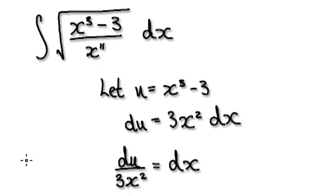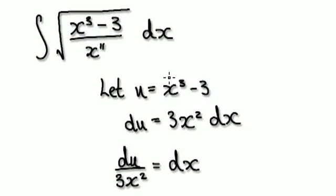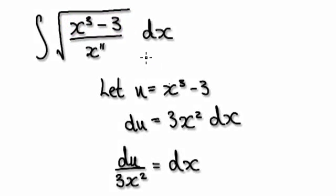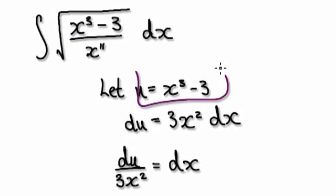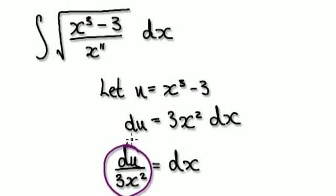Okay, so to do this, let u be this. So let u be this, and it's a lot of trial and error. If you were to do this, how would you know that you should make this to be your substitution? It is through trial and error, so play around. So let u equal this thing here. If u equals this thing here, then dx equals this thing here.